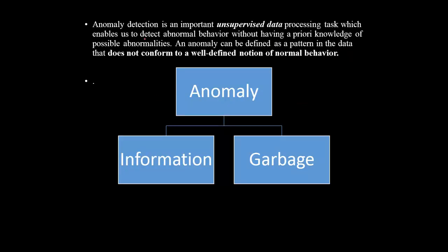Anomaly detection is an unsupervised data processing task. The detection of outliers or anomalies in the data is unsupervised — meaning the algorithm doesn't use labeled data, such as in clustering. We often don't have labeled data indicating which ones are anomalies. Oftentimes we will only have a new dataset and have no idea what the anomalies for that given dataset look like. In that situation, the only algorithms we can use are unsupervised learning algorithms.